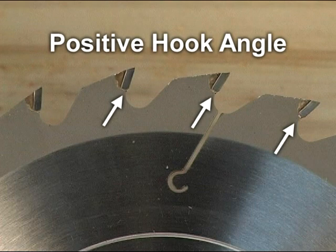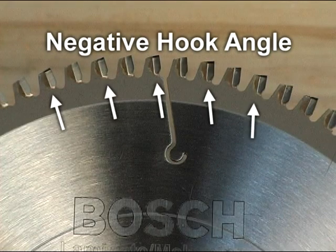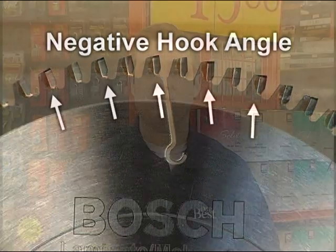Hook angle is another consideration when choosing a saw blade. The hook angle refers to the angle of the blade tip in reference to the rotation of the blade. A positive hook angle means the teeth are tipped toward the direction of the blade's rotation. A blade with a high positive hook angle — greater than 20 degrees — makes an aggressive, fast cut, and rip blades usually have high hook angles. A negative hook angle means the tips of the teeth point away from the rotation. It's also possible to have a zero degree hook angle. A negative or zero degree hook angle helps slow the feed rate and prevents binding and climbing, where the blade attempts to pull itself out of the cut. These blades are common on miter saws.